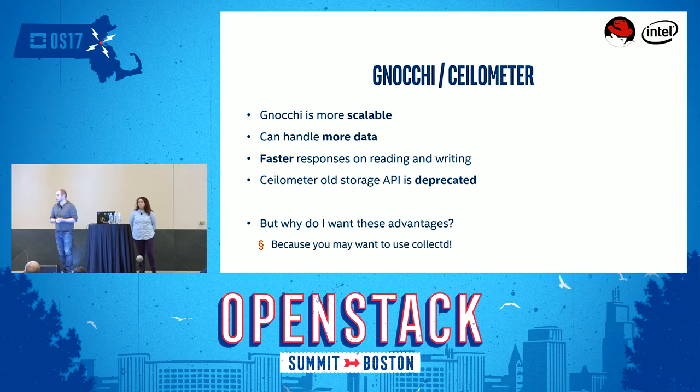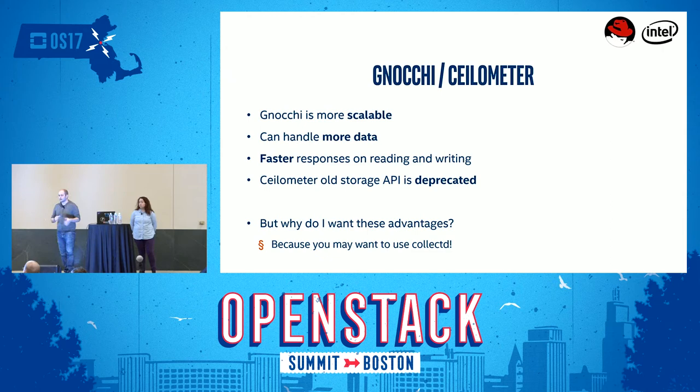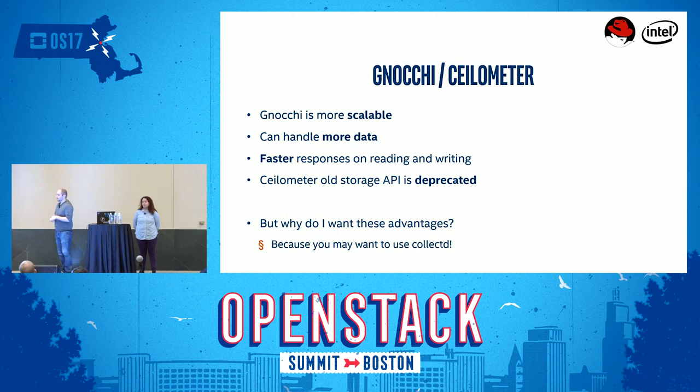On large deployments past a week or so, you could have millions of points in the Ceilometer database and it would just explode — any query would take like 20 minutes to reply, which is not very usable. So that old API and storage database part of Ceilometer has been deprecated last cycle and should be removed in the future. Gnocchi is now the new API to use if you want to retrieve data from your OpenStack cloud or feed more into it.